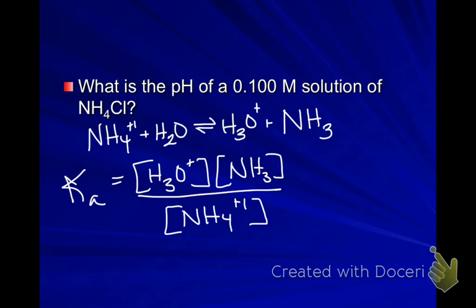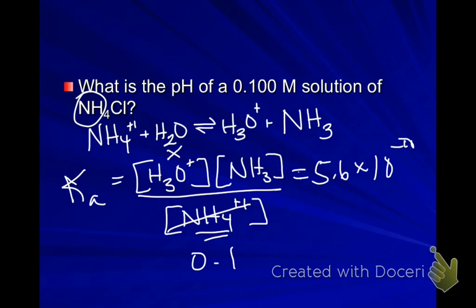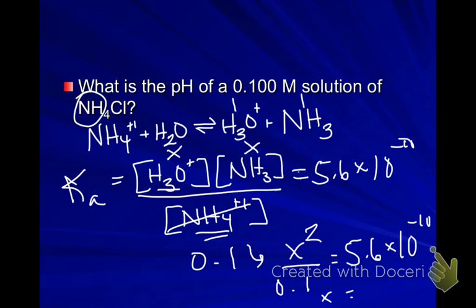So now I just have to plug in what I know. I know this whole thing is equal to 5.6 times 10 to the negative 10. And I know that the concentration of NH4+ is going to be the same as what it is here in the salt, so I know that's going to be 0.1. What I don't know is H3O+, so I'm just going to plug in X. I also know that for every 1 H3O+ that I make, I'm going to make 1 NH3, so I can do a 1 for 1 X times X. So I essentially have X squared over 0.1 equals 5.6 times 10 to the negative 10.